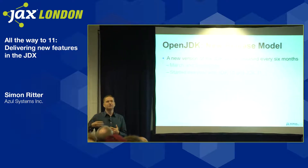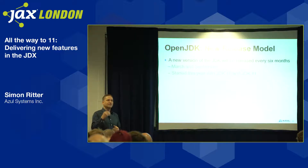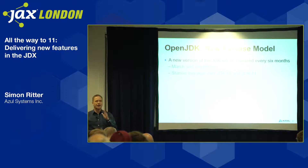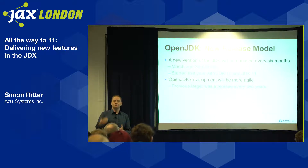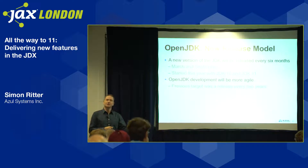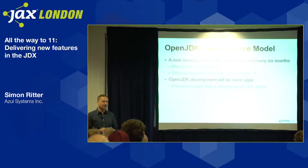Oracle came up with the idea of a new release model. Rather than waiting anywhere between two and a half and four and a half years between major releases, they were going to have a new release every six months. JDK 9 came out in September last year, JDK 10 in March this year, and JDK 11 just a few weeks ago. So we have this six-month release cycle.